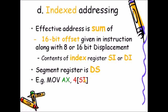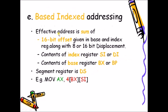In based index addressing mode, a base register, an index register, and a displacement are all added together. For example, SI and BX along with a displacement are added, and this resultant value is treated as an address. The contents at that particular address are then copied into the AX register.